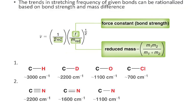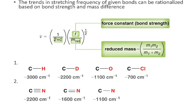We can see both trends when comparing different stretching frequencies. The reduced mass trend: as we go from carbon–hydrogen to carbon–deuterium, and then to carbon–oxygen and carbon–chlorine, as the mass of the atom paired with carbon increases, the vibrational frequency decreases. The force constant trend: single bonds are weaker than double bonds, which are weaker than triple bonds. So when we go from a weaker single bond to a stronger double bond to an even stronger triple bond, the vibrational frequencies increase.